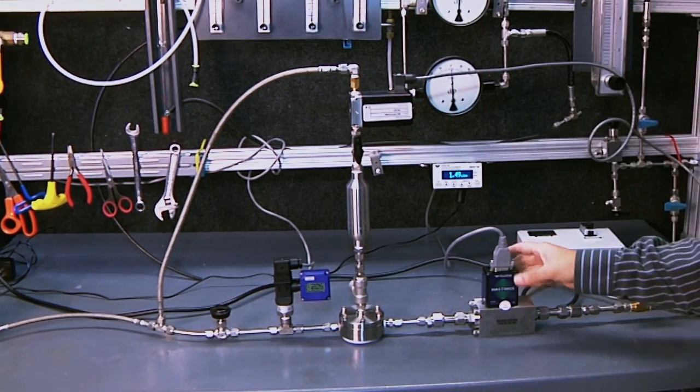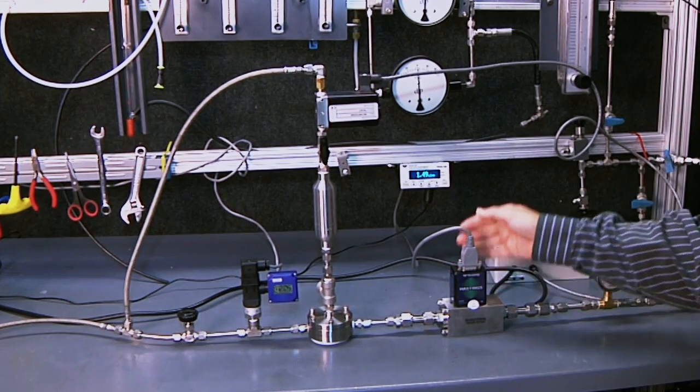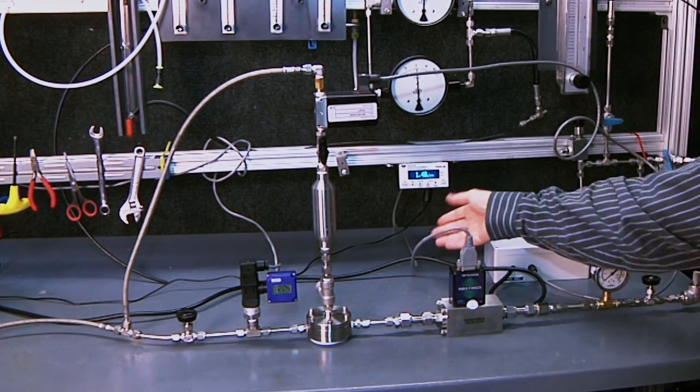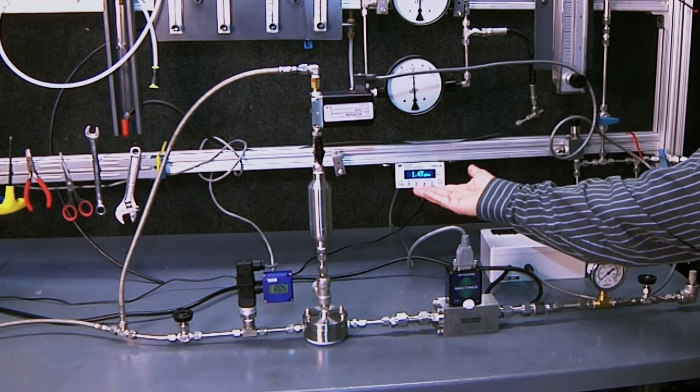One addition to the system is this Teledyne Hastings mass flow monitor. It's going to measure the actual flow in the system. It's going to be up here on this display. Right now we're at 1.48 standard liters per minute.